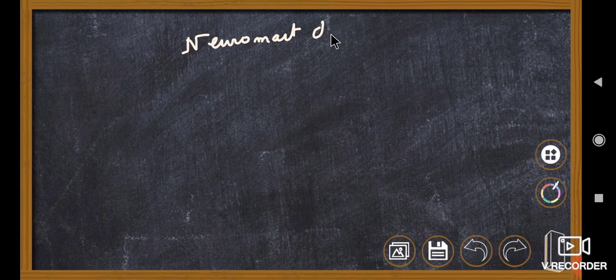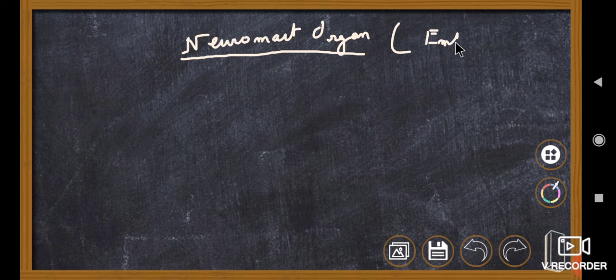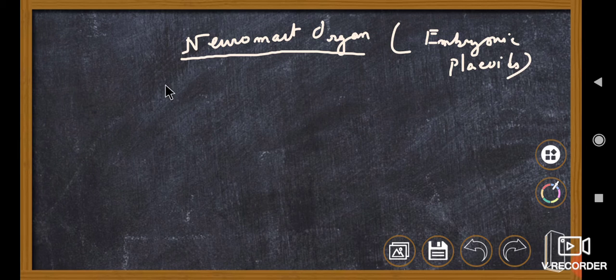The basic unit of reception is called a Neuromast organ. The actual receptors in this case are the Neuromast organs. Their origin is actually the embryonic placodes — that is, Neuromast organs originate from embryonic placodes. So this is actually what a Neuromast organ is.